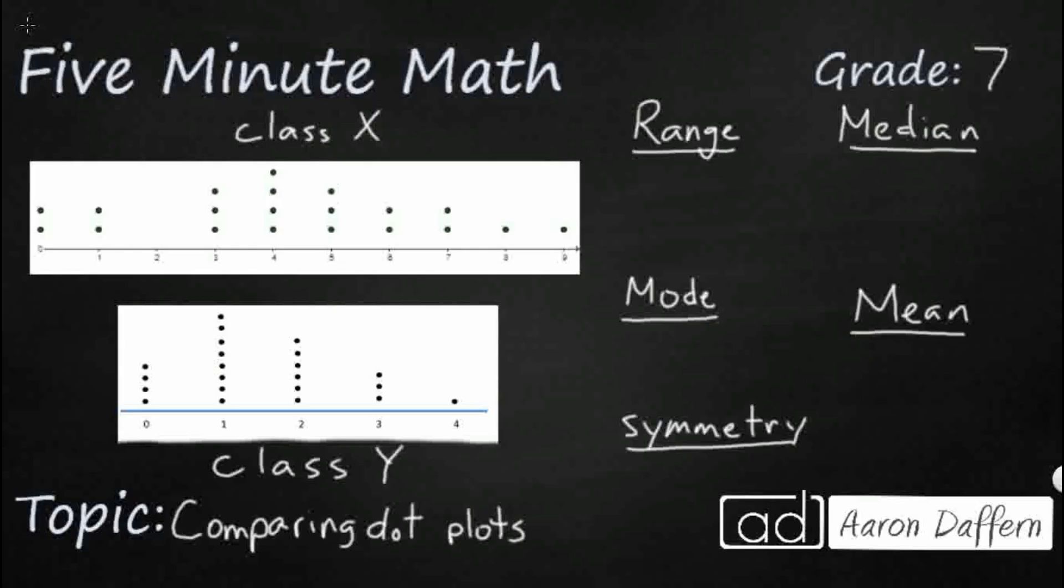So we've got two different dot plots here. You see the class X dot plot is a lot bigger than the class Y dot plot. So let's say we ask the students in each of these classes how many pets do you have? In class X we're going from zero all the way up to nine and in class Y we're going from zero up to four. So how can we compare these two dot plots?